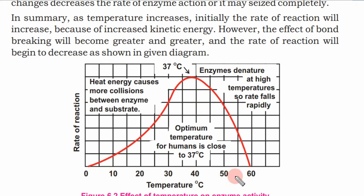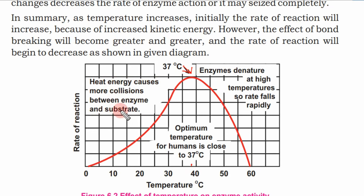In the diagram, the x-axis shows temperature in centigrade (0, 10, 20, 30, 40, 50, 60) and the y-axis shows rate of reaction. The optimum temperature for humans is close to 37°C, which is the body temperature. After 40°C, the rate of reaction declines. Heat energy causes more collisions between enzymes and substrate, increasing the reaction rate up to the optimum.